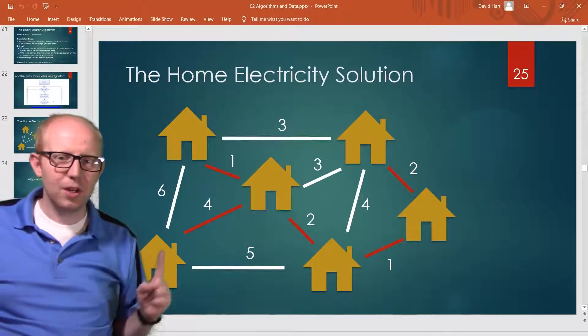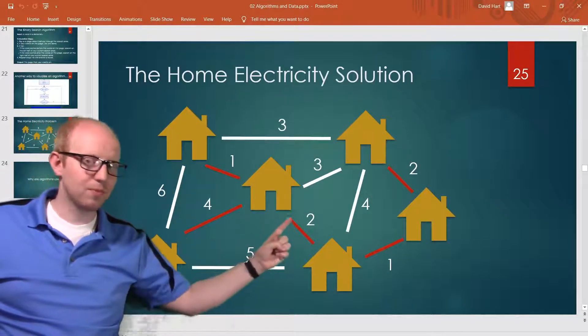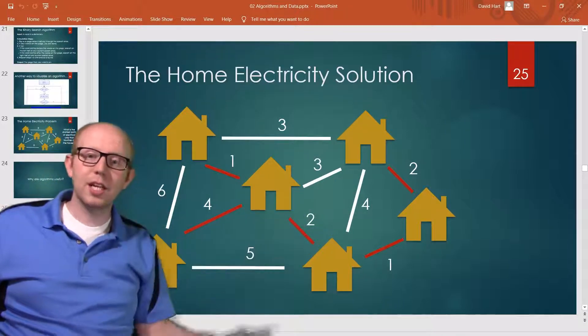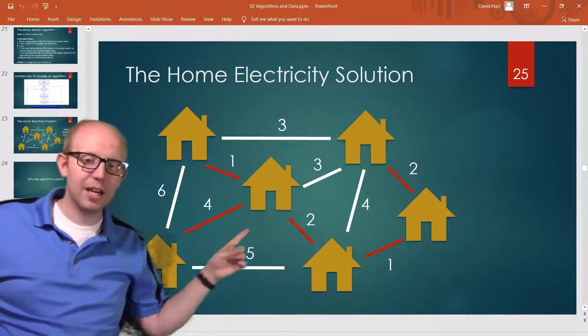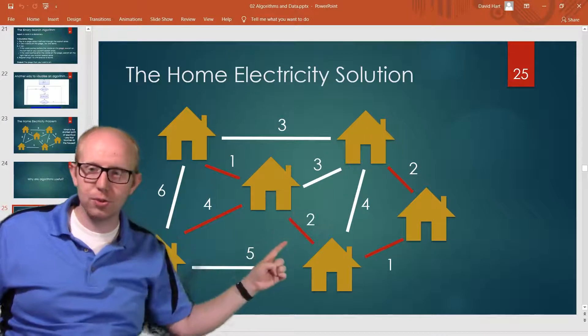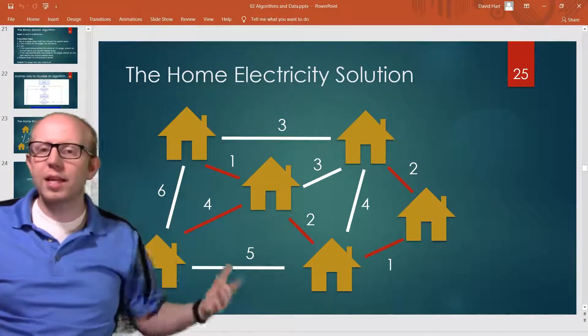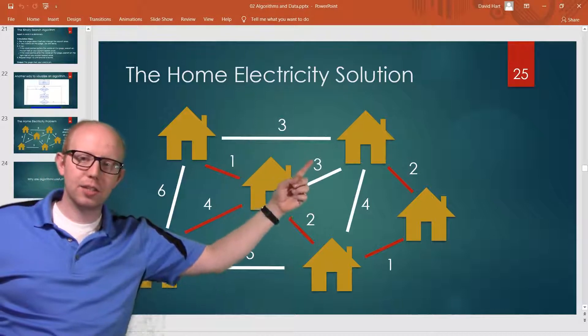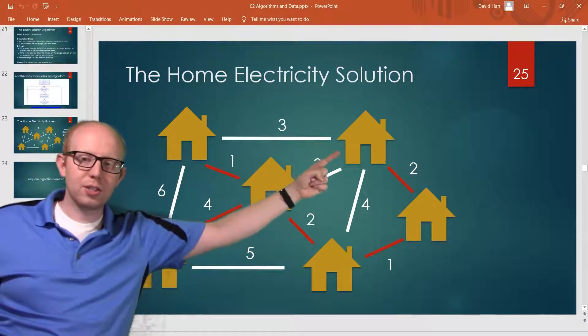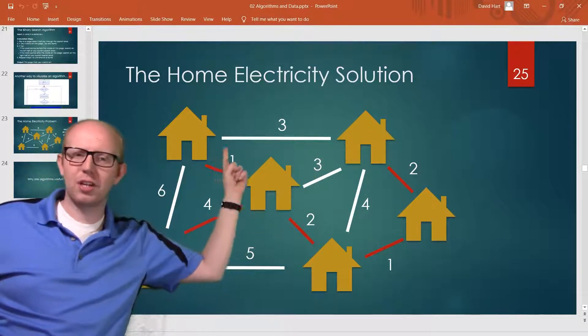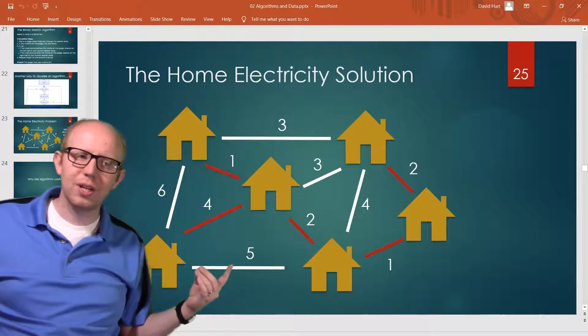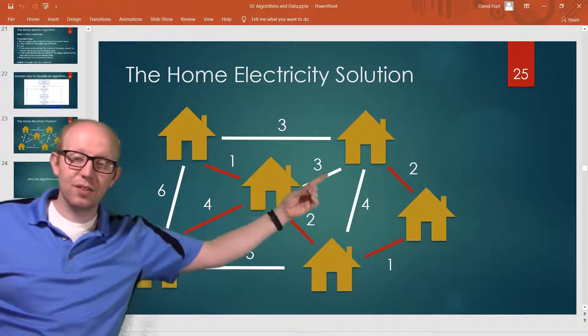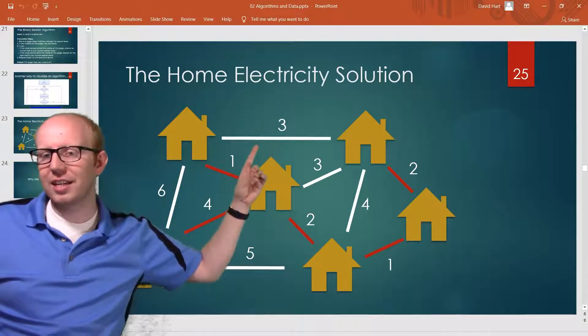Well the next shortest wires are these twos, so since those houses were not already connected I went ahead and added those twos right there. Well what's the next possible shortest wire we could add? Well that would be these threes, but that house is already connected and this house is already connected, so there's no reason to have those threes in there right, they're already connected houses.